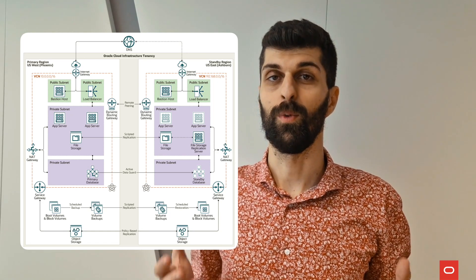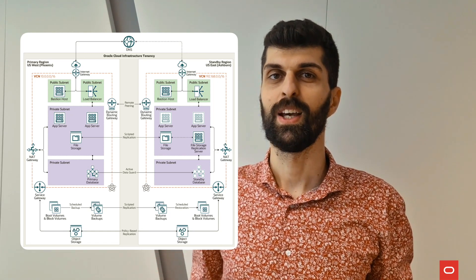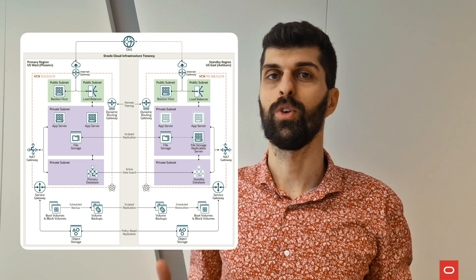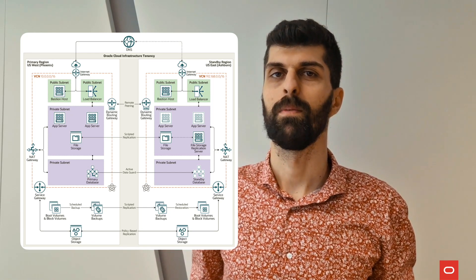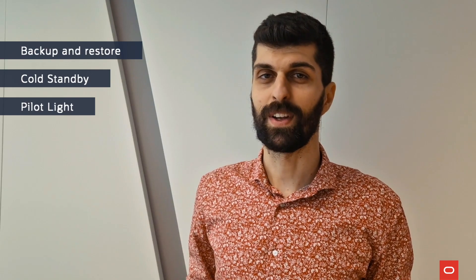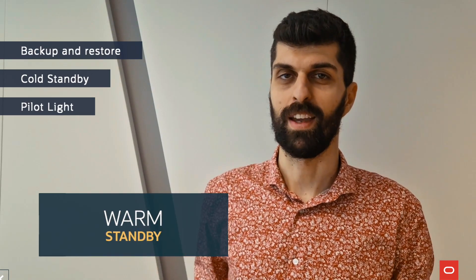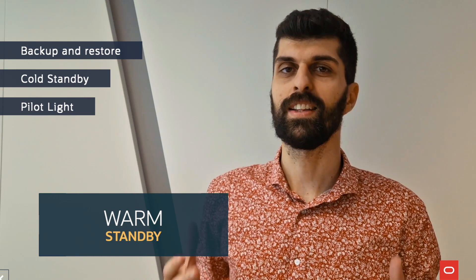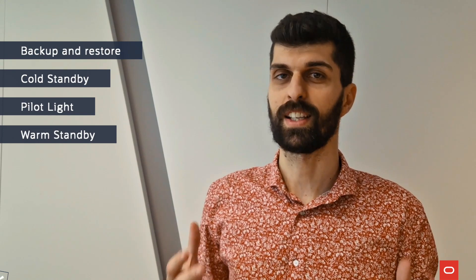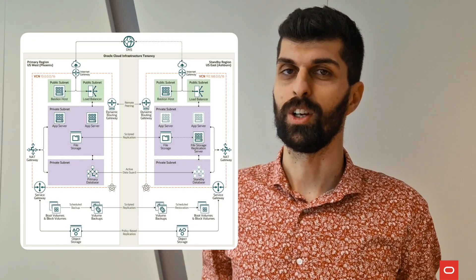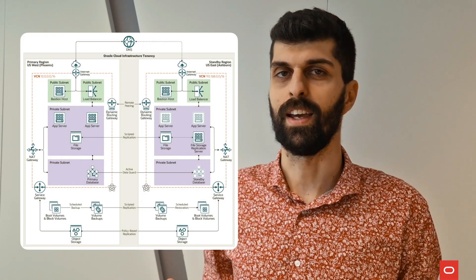For a fully functional recovery with pilot light, you might need to start additional non-core services and scale up others before everything will be up and running. That brings us to the next method — warm standby. A warm standby is a scaled-down version of a full production environment that is always running at the DR site. The warm standby solution is an extension of the pilot light.